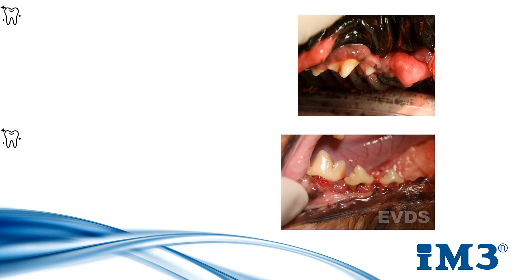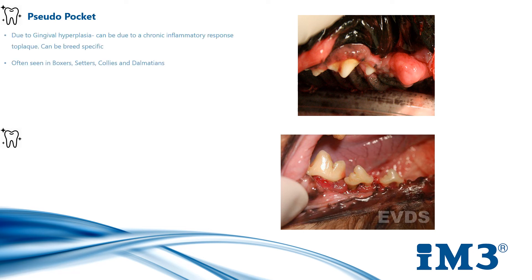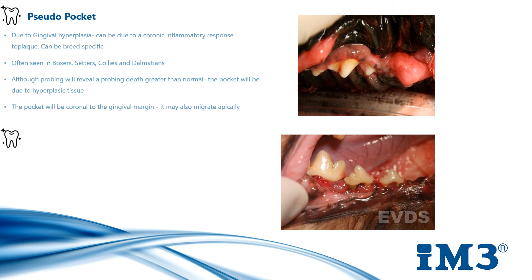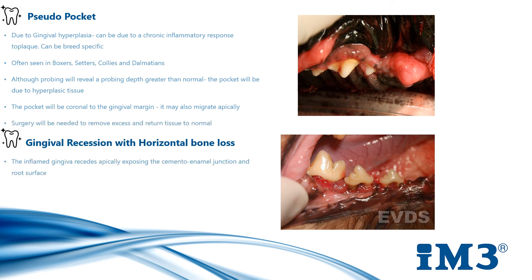Whilst probing, we need to know about pseudopockets. These are due to gingival hyperplasia, which can be caused by a chronic inflammatory response to plaque. However, they can also be breed-specific and are often seen in boxers, Irish setters, collies, and dalmatians. Although probing will reveal a depth greater than normal, the pocket is due to excess hyperplastic tissue and is coronal to the gingival margin, and may also migrate apically down the tooth root. Sometimes surgery will be needed to remove the excess tissue.